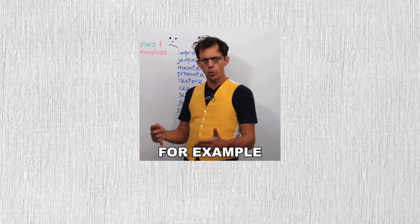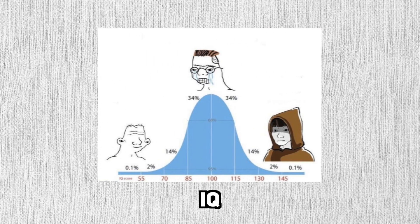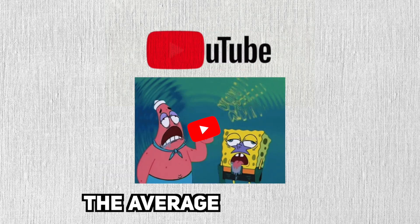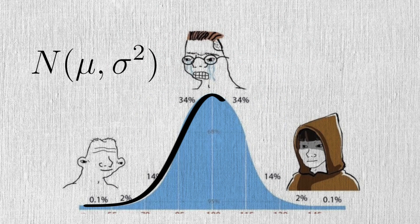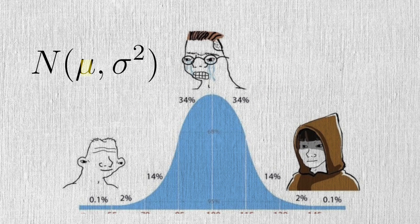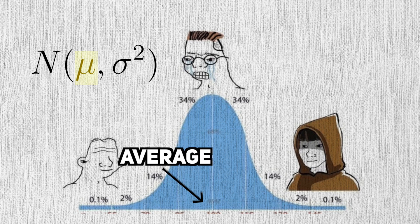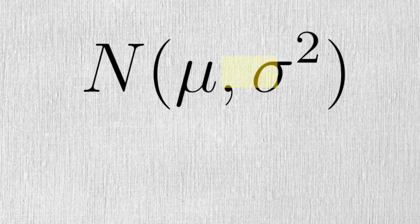Let's explore an example. Let's say that I want to understand the IQ of the average YouTuber. To model this, we'll use a normal distribution. I expect that most IQs will center around some value called the mean, known to most people as the average. A normal random variable has two parameters.